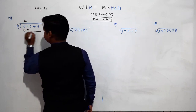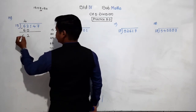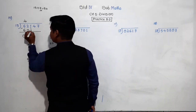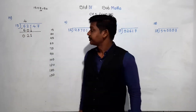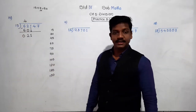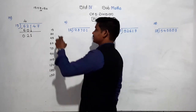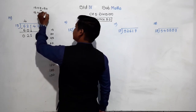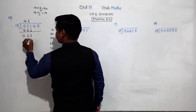15 fours are 60. So 4 goes in the quotient. Now subtract 60 from 62. The remainder is 2, so we bring it down. The next digit is 1, making it 21. Now 21 divided by 15 — 21 is not in the table of 15. 15 ones are 15. So 1 goes in the quotient.